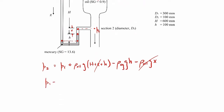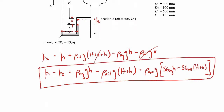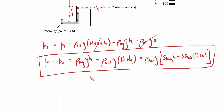So we're trying to find p1 minus p2. That will be rho_hg times g times little h, minus rho_oil times g times (capital H plus little h). In terms of specific gravity, it'll be the density of water times g times the specific gravity of mercury times little h, minus the specific gravity of oil times (capital H plus little h). That's the pressure difference found using just the manometer.